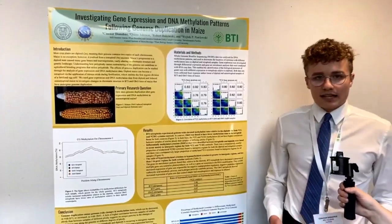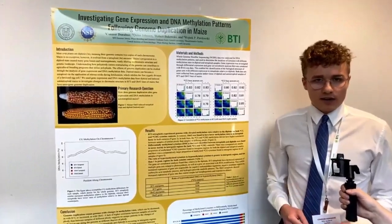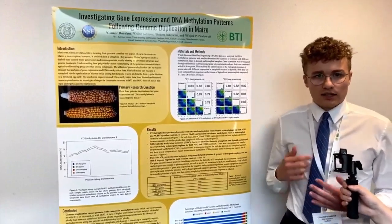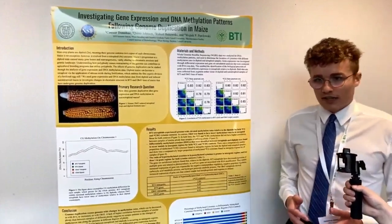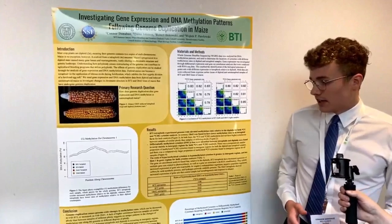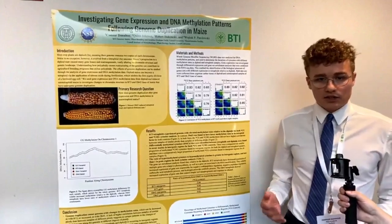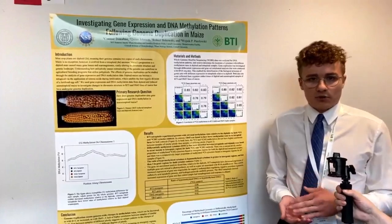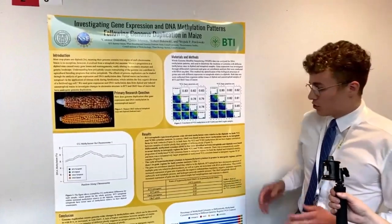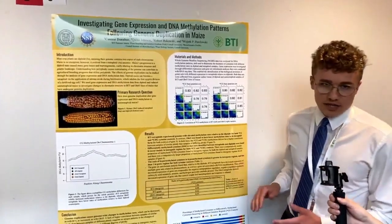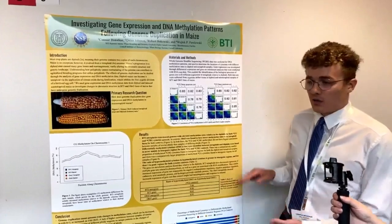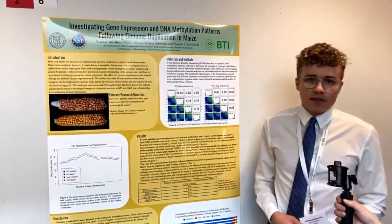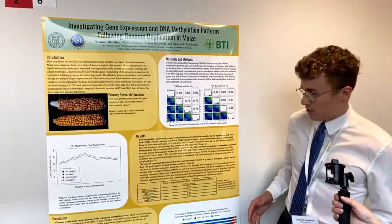When I looked at the individual cytosine sites where methylation occurs — because methylation occurs at cytosines along the DNA sequence — I found that the ratio of hypermethylated cytosines, so cytosines where there's increased methylation, to hypomethylated cytosines where there's decreased methylation, was greater than one in intergenic regions of B73 and around one or less than one in genic regions of B73. And I found the opposite pattern in OH43, where it was much less than one.